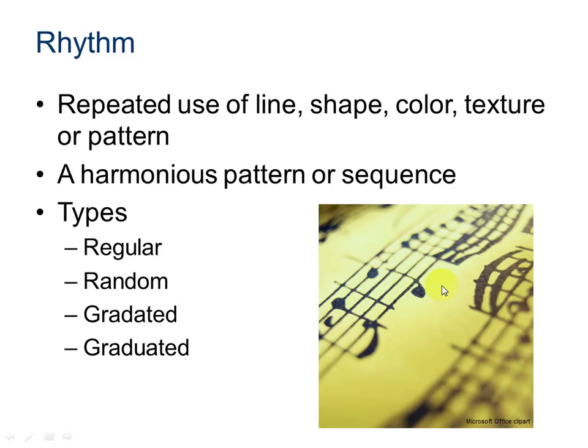Rhythm is the repeated use of lines, shape, color, texture, or a pattern. It seems to tie the whole pattern or sequence together — they have to all work together, as we see here in this sheet music. There are four different types of rhythm: regular, random, gradated, and graduated.